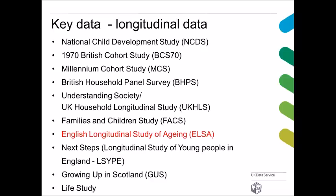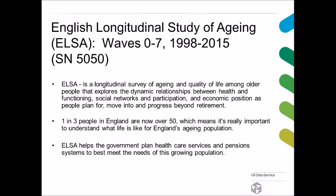Out of our key longitudinal data, I am focusing on the English Longitudinal Study of Aging, or ELSA. ELSA is a longitudinal survey of aging and quality of life among older people that explores the dynamic relationships between health and functioning, social networks and participation, and economic position as people plan for, move into, and progress beyond retirement. We hold so far seven waves from 1998 to 2015, and wave eight is underway, starting May 2016. The study number in our data catalog is SN 5050.